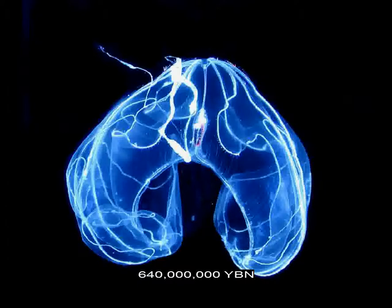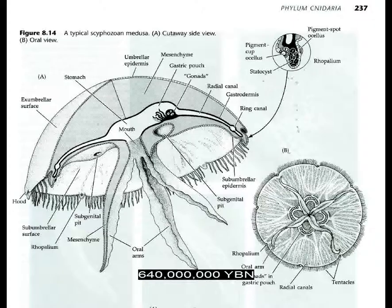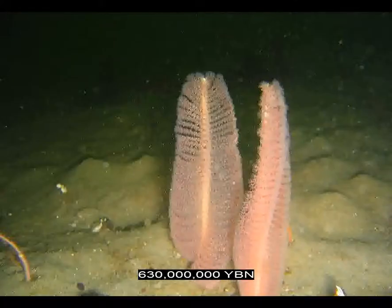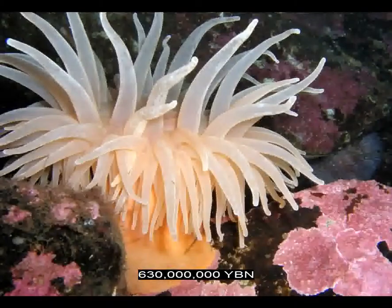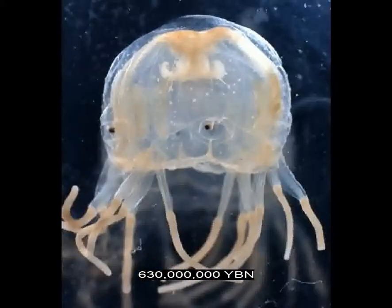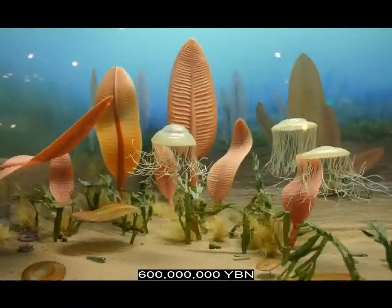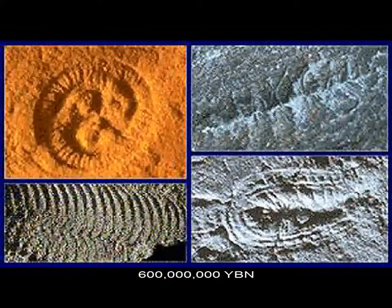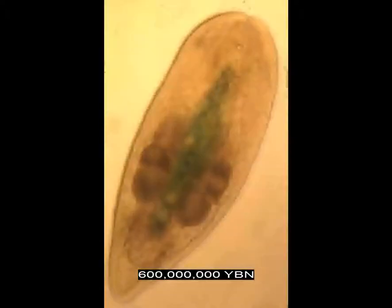Animals Radiata — ctenophores evolve, comb jellies. Female gonad — ovary — evolves in metazoans. Radiata cnidarians evolve: sea anemones, corals, jellyfish. Earliest animal eye. Start of Ediacaran soft-bodied invertebrate fossils. Bilateral species evolve — two-sided symmetry. Earliest animal brain — ganglion, memory.